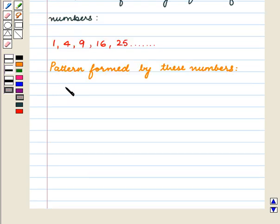The first number is 1, which can be written as 1². The next number is 4, which can be written as 2². Similarly, 9 can be written as 3².